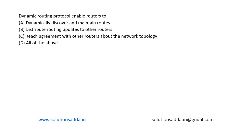This is a question from computer networks. A dynamic routing protocol enables routers to dynamically discover and maintain routes, distribute routing updates to other routers, and reach agreement with other routers about the network topology — all of the above. The basic concept of dynamic routing is a process where a router can forward data via different routes to a given destination based on current conditions of the communication circuit within a system.